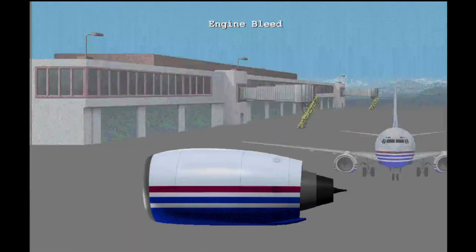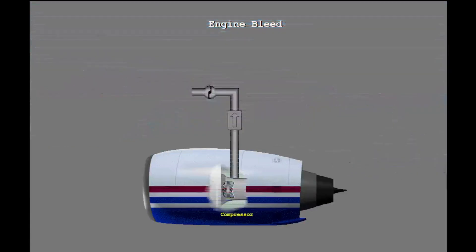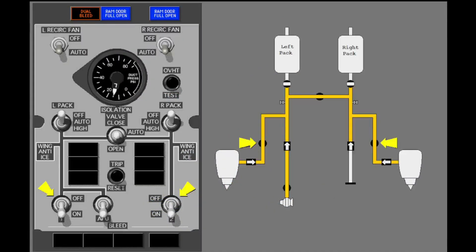During flight or on the ground, the engines can supply the bleed air system with bleed air. The engine's compressors supply bleed air to the bleed air system. The engine bleed air valve controls the bleed air that enters the bleed air system. If the switch for the engine bleed is open, the engine bleed air pressure opens the valve. The engine bleed air switches are normally kept in the on position. When the engines are running, the bleed air valves open and engine bleed air enters the bleed air system.